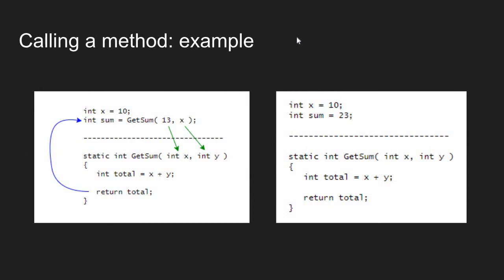Let's look at an example of what happens when we call a method and pass values into it. Above the dashed line is my main method, and below is a new method definition — methods are not defined inside other methods; they are defined outside of one another but inside classes. The method header tells us: this is a static method with a return type of integer, the name is getSum, and inside the parentheses are two integer input parameters — one named x and one named y.